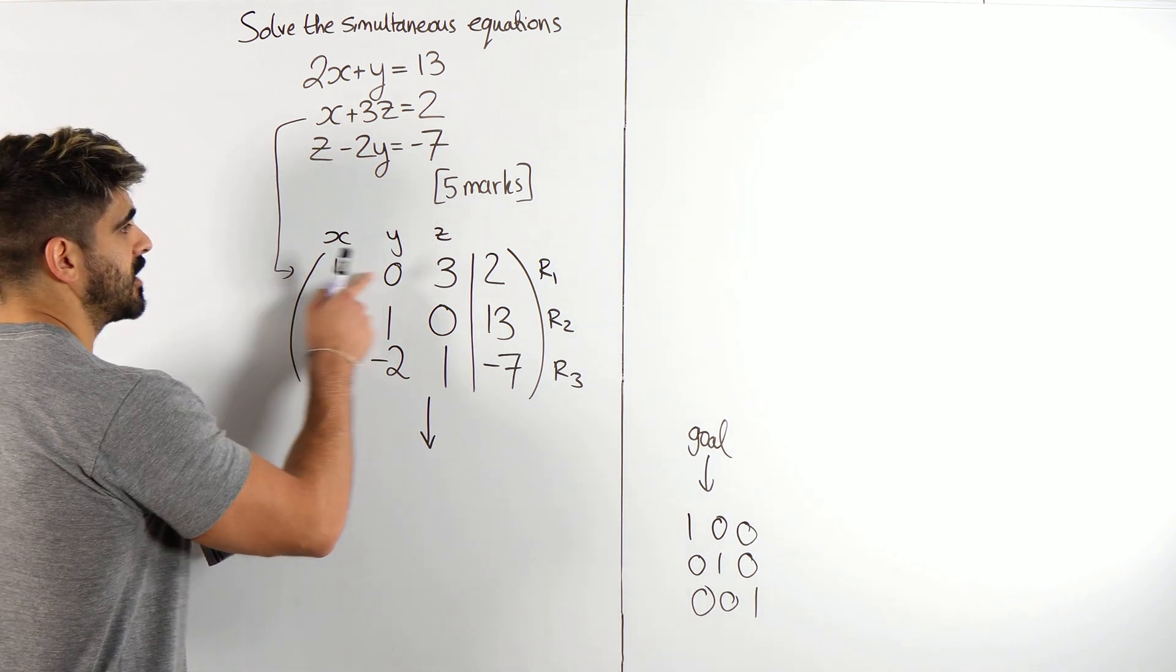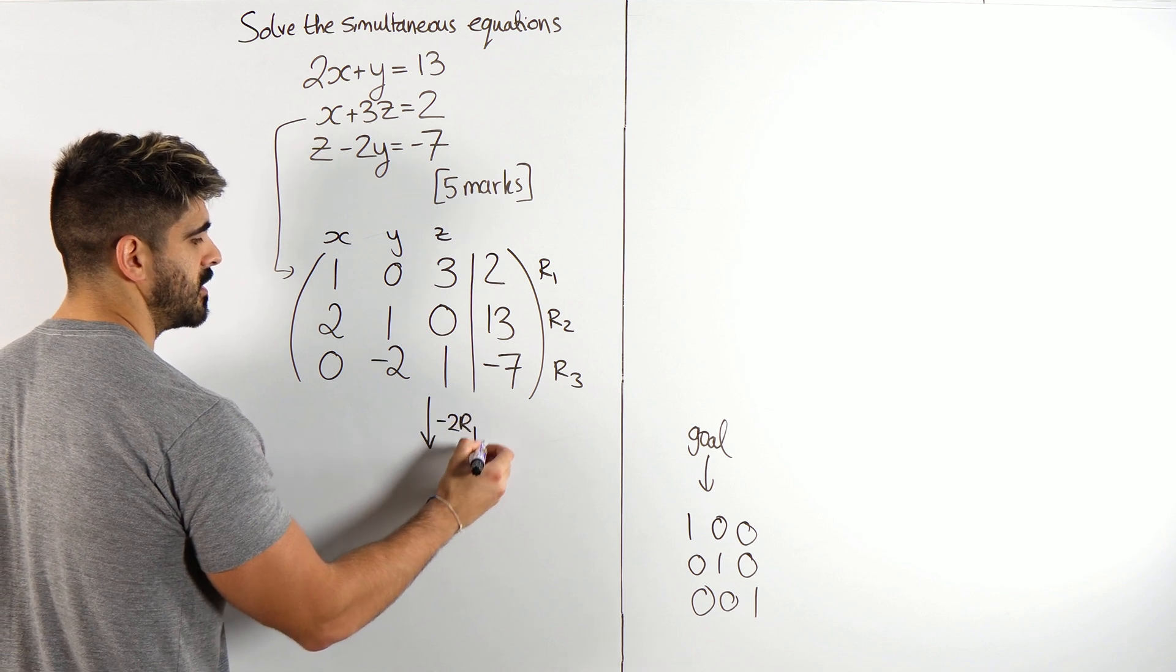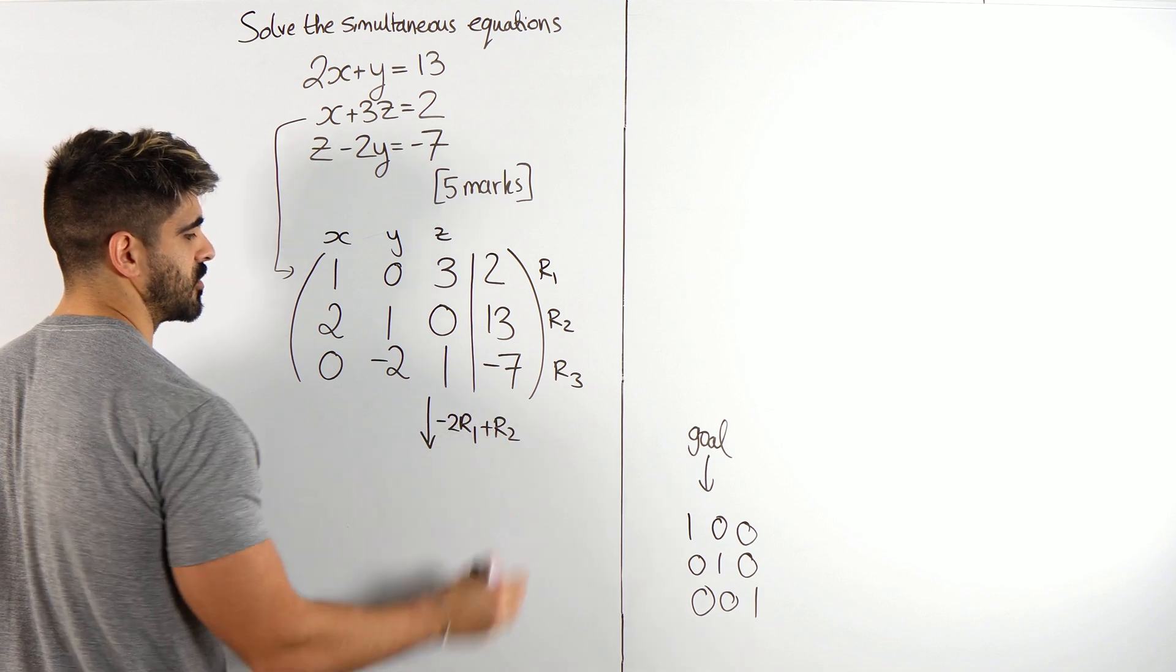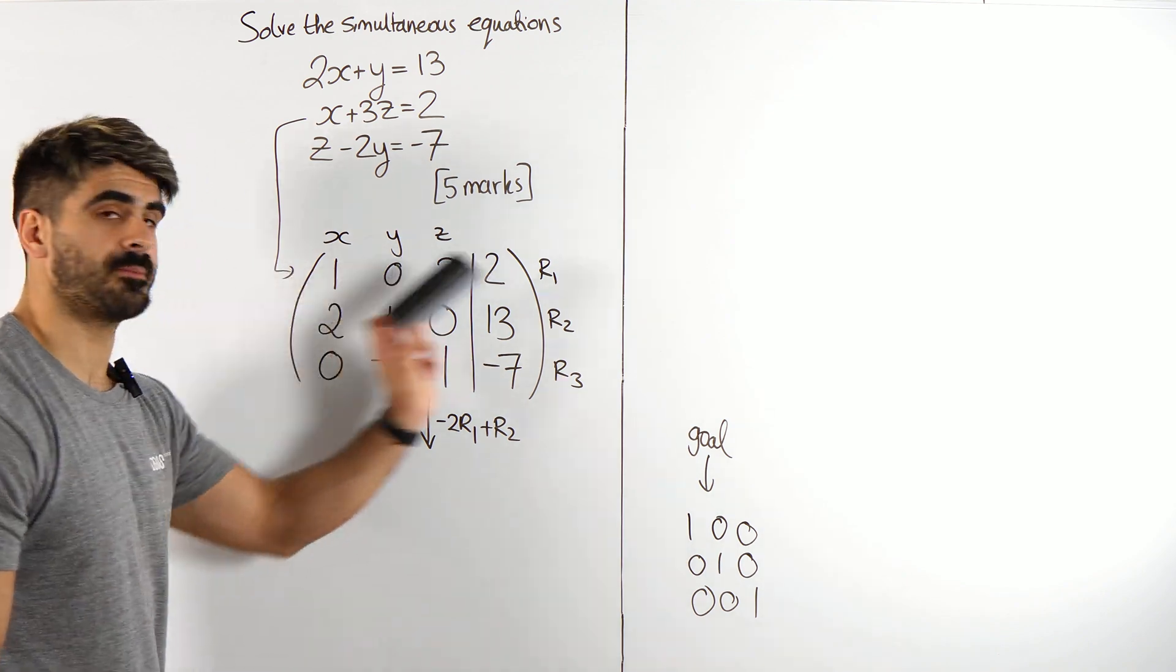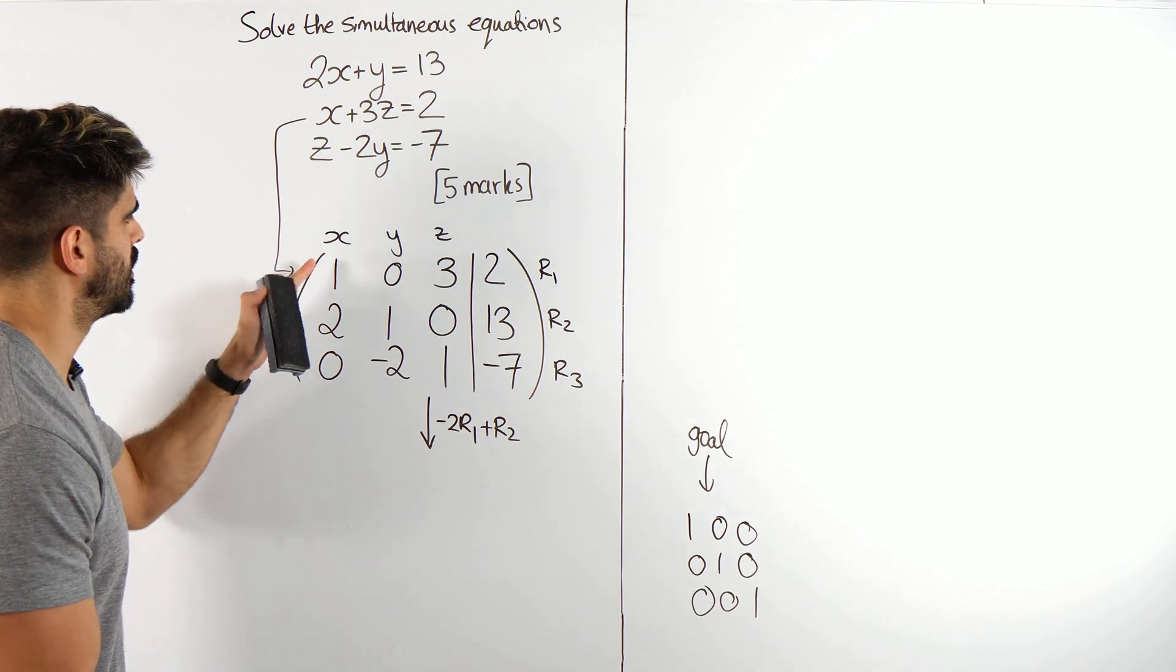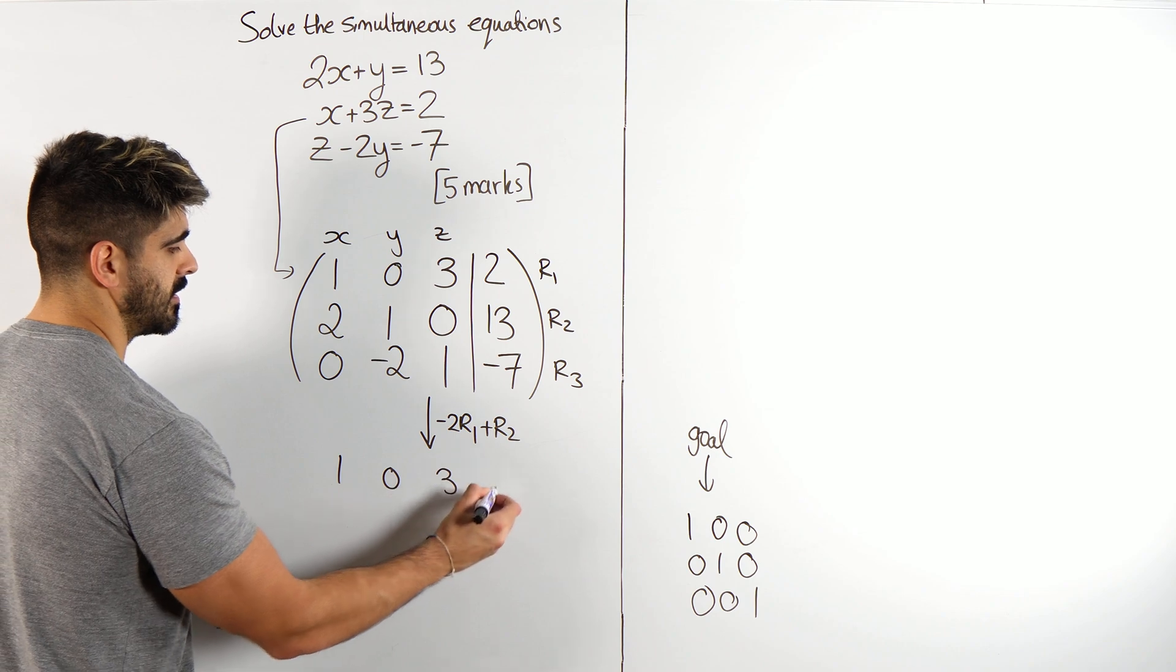Let's write that down. I'm going to take row 1, I'm going to times it by minus 2, so I'm doing minus 2 lots of row 1, and I'm adding it to row 2. Row 1 does not get influenced by this, we call it the pivot row. So we have 1, 0, 3, 2.